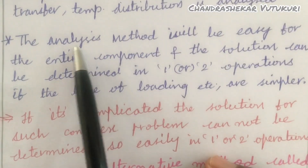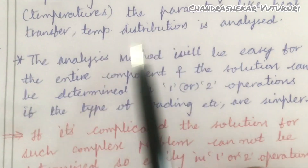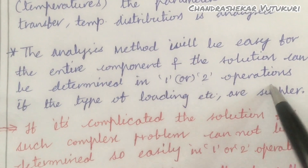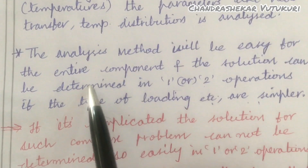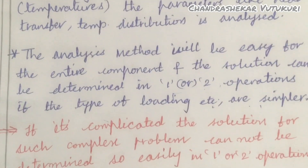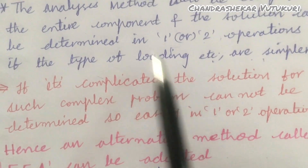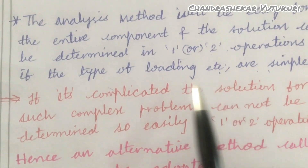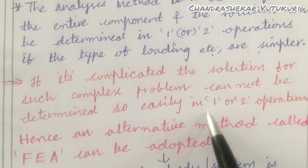The analysis methods will be easy for the entire component if we look at it early on — analyzing a component becomes much easier. The solutions can be determined in one or two operations if the type of loading is simple. We are going to work out in one or two iterations and the solution will be very easy. But in finite element methods, if it is complicated and simpler loads are not acting, then the solution will be the complicated one.